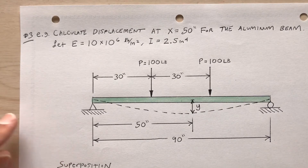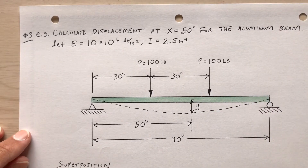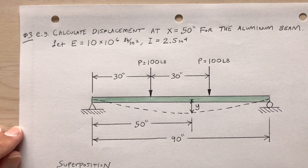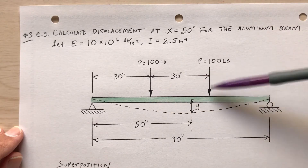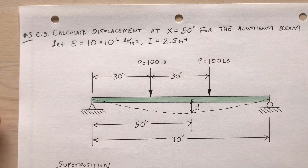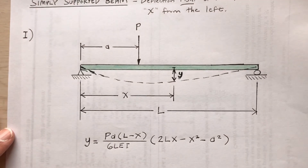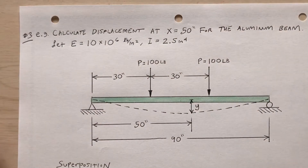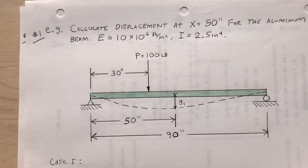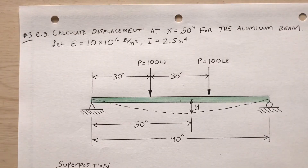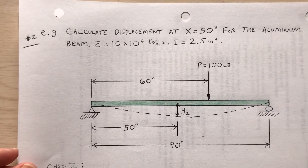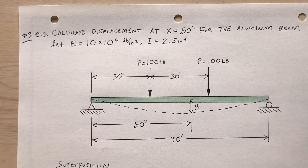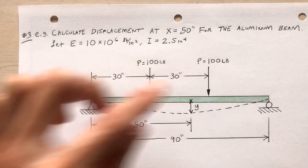Example 3: same beam, find displacement at 50 inches, same modulus of elasticity and moment of inertia, but now there are two loads — one at 30 inches and one at 60 inches. Neither formula alone handles two simultaneous loads. However, this loading arrangement is actually the combination of Examples 1 and 2: 100 pounds at 30 inches and 100 pounds at 60 inches.